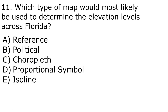Question 11 of 17 is on types of maps. The correct answer is E, isoline maps. We're determining elevation levels across Florida, which is quantitative data. That rules out reference and political maps — we want a thematic map. A choropleth would work for static elevation data per country. Proportional symbols wouldn't make sense for elevation. Isoline maps are best: the closer the lines are together, the more change in elevation; the more dispersed the lines, the less change.